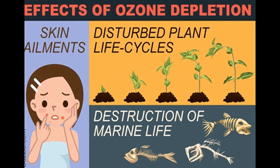As ozone depletes in the stratosphere, it forms a hole in the layer. This hole enables harmful ultraviolet rays to enter the Earth's atmosphere.